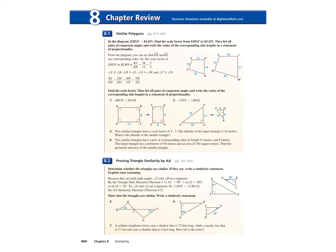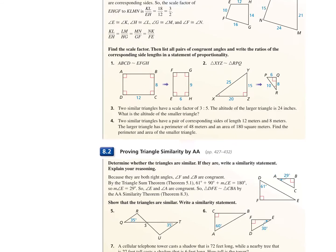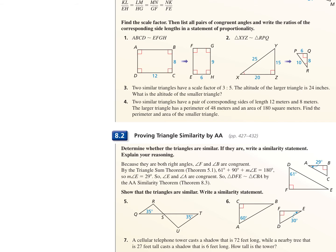Are there any questions on this that anyone wants to see explained? Here it says two similar triangles have a pair of corresponding side lengths of 12 meters and 8 meters, and then it gave the larger triangle's perimeter as 48 and its area as 180. So I'm going to take the corresponding side lengths and put them together in a fraction. The corresponding side length is also the same as the scale factor. I can divide both by 4 and this becomes 2 thirds.